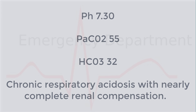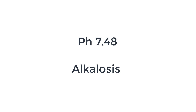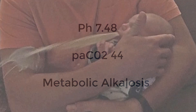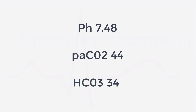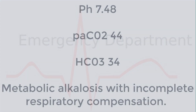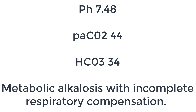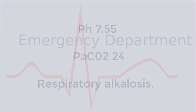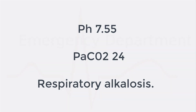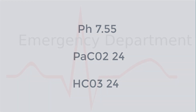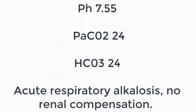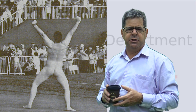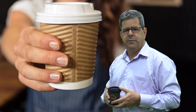Example 3: pH 7.48, alkalotic; CO2 is up as compensation → metabolic alkalosis, like pyloric stenosis; bicarb is retained to make up for chloride loss — metabolic alkalosis with incomplete respiratory compensation since the pH is still abnormal. Example 4: pH 7.55, alkalotic; CO2 is low → respiratory alkalosis; bicarbonate is pretty normal — this is acute respiratory alkalosis with no time for compensation; it was hyperventilation after a concert. That'll do for basic arterial blood gas interpretation — see you next time!